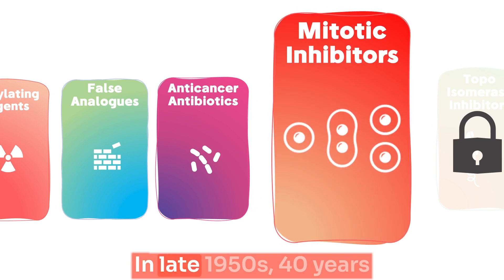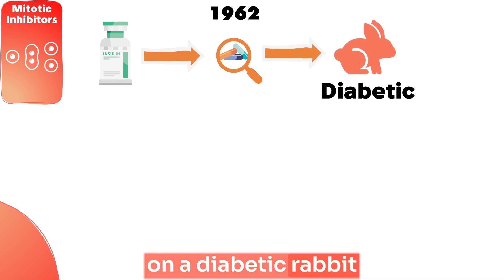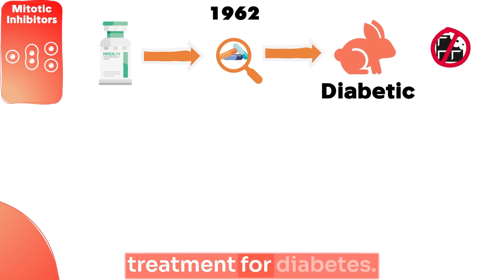The fourth type of chemotherapies are the microtubule inhibitors. In late 1950s, 40 years after the discovery of insulin, researchers were testing several chemical compounds on a diabetic rabbit, seeking an alternative treatment for diabetes.